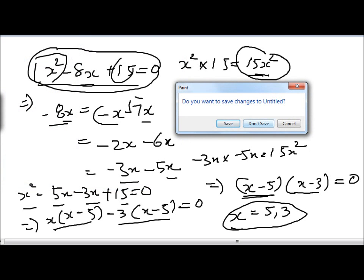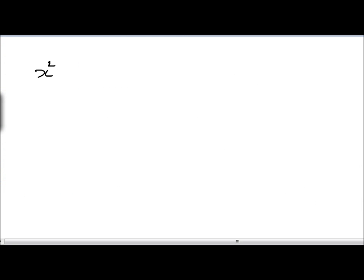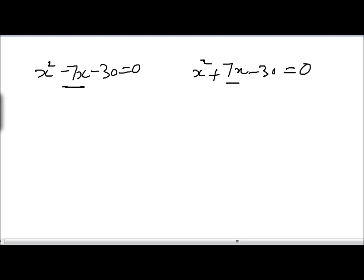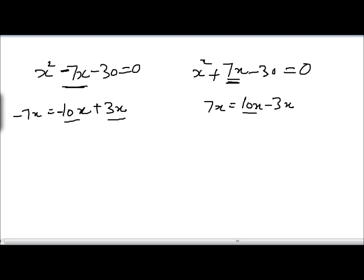I'll go through two more problems very quickly. Be careful because these problems are pretty tricky and students usually make mistakes. We have minus 30 equal to 0, with minus 7x on one side and 7x on the other. We need to split minus 7x such that the product condition is met. We can write minus 7x as minus 10x plus 3x, and correspondingly 7x as 10x minus 3x. So we split minus 7x into minus 10x plus 3x, and 7x into 10x minus 3x.